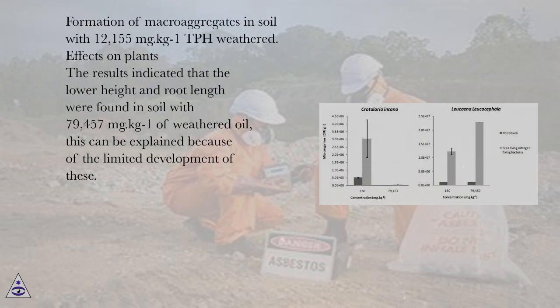Alteration in the Retaining Moisture of Soil: The oil can form macroaggregates and macropores that increase water flow, and these changes inhibit the water retention in the soil, which is moistened only after a long period of contact, so that plants may suffer water stress and die. Formation of macroaggregates in soil with 12,155 mg·kg⁻¹ TPH weathered.